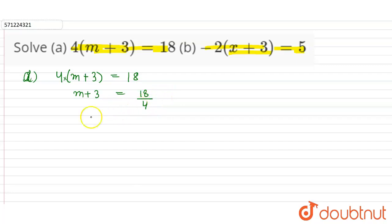So for 18 divided by 4, so m is equal to 18 divided by 4 plus 3 will become negative 3. Now we will take the LCM of 1 and 4. So LCM of 4 and 1 is 4. So 18 as it is.